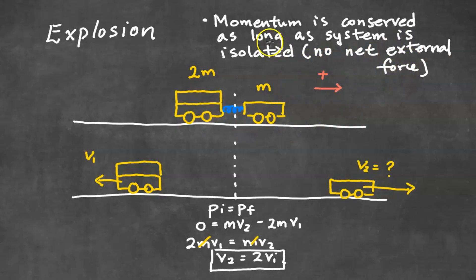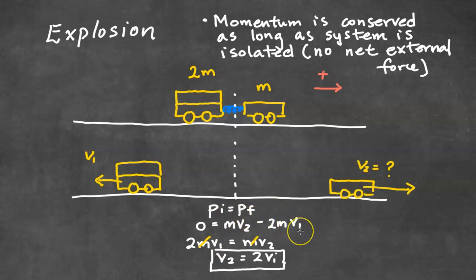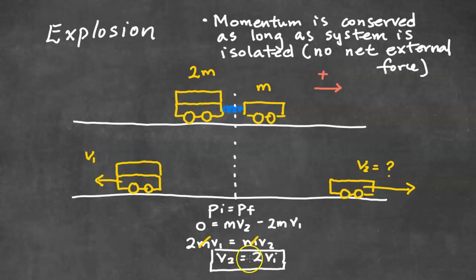Making right positive, if momentum is conserved, the initial momentum equals the final momentum. Because initially nothing is moving, the left side is zero. After the explosion, the two carts move away from each other. On the right, the momentum of the cart on the right is m·v2, and the momentum of the cart on the left is 2m·v1, with a negative sign because it moves in the negative direction. Moving the 2m·v1 term to the left and canceling the m's, we see that v2 equals twice the velocity of the cart on the left.